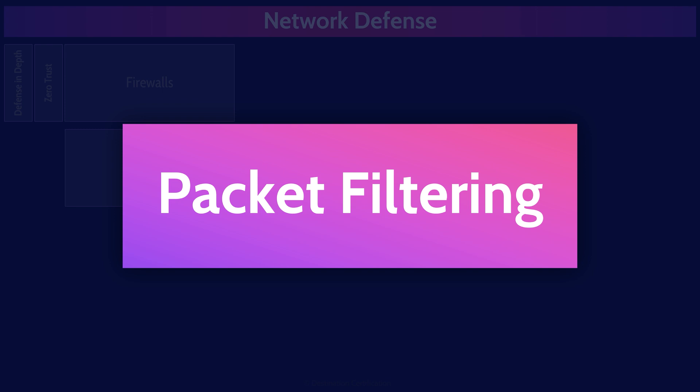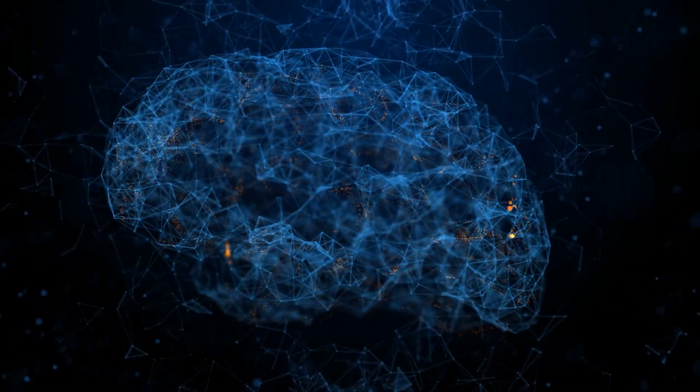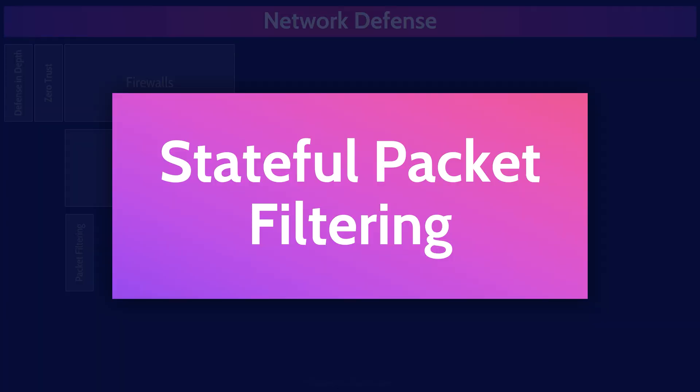Packet filtering firewalls are not very smart, but they are extremely efficient and fast, can make decisions very quickly, meaning they have very low latency and don't slow traffic down much. Stateful packet filtering firewalls still only look at a packet's header, but they are a little more intelligent in that they maintain a state table — a little bit of memory that keeps a history of recent traffic through the firewall. When systems want to establish a TCP connection, they must go through the TCP three-way handshake process of SYN, SYN-ACK, ACK. The stateful packet filtering firewall will record that these two systems have completed the handshake and established a connection. If another system were to send a TCP packet out of the blue, the firewall is likely to block it because it has no memory in its state table of those systems establishing a connection.